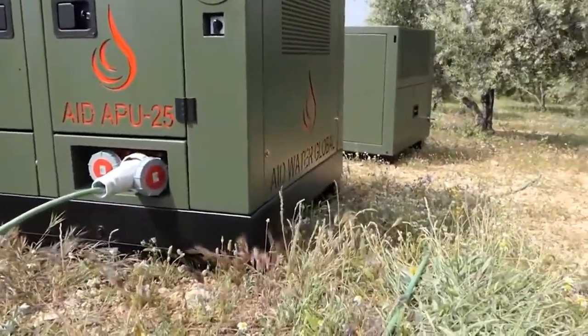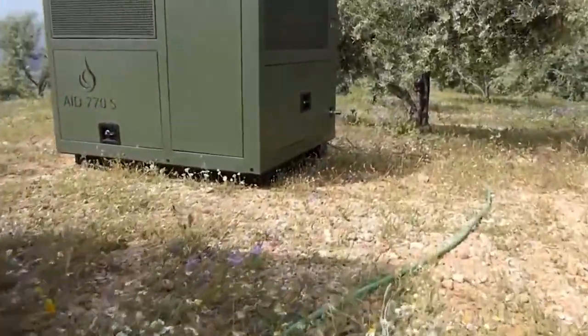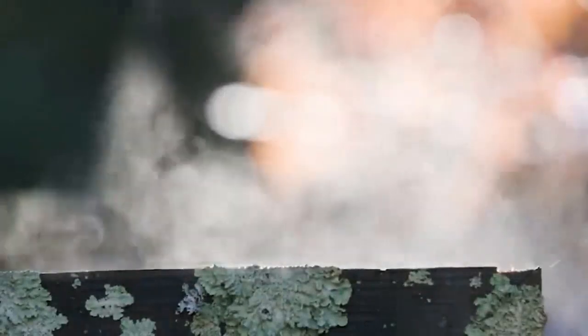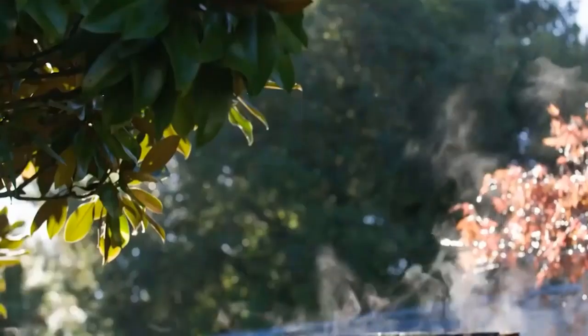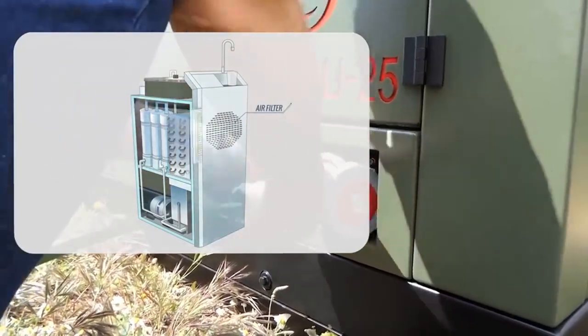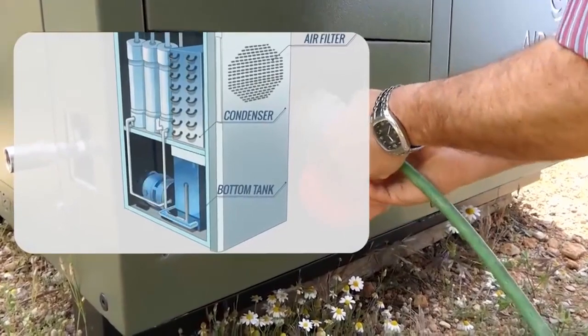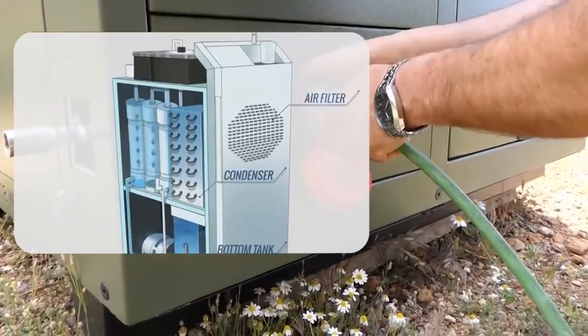Advantages of solar powered AWGs: The use of solar energy in AWGs offers several advantages. Firstly, it significantly reduces operational costs by minimizing reliance on large amounts of electricity. Solar heat accounts for over 90% of the energy used in the A2WH system, making it highly efficient and environmentally friendly.